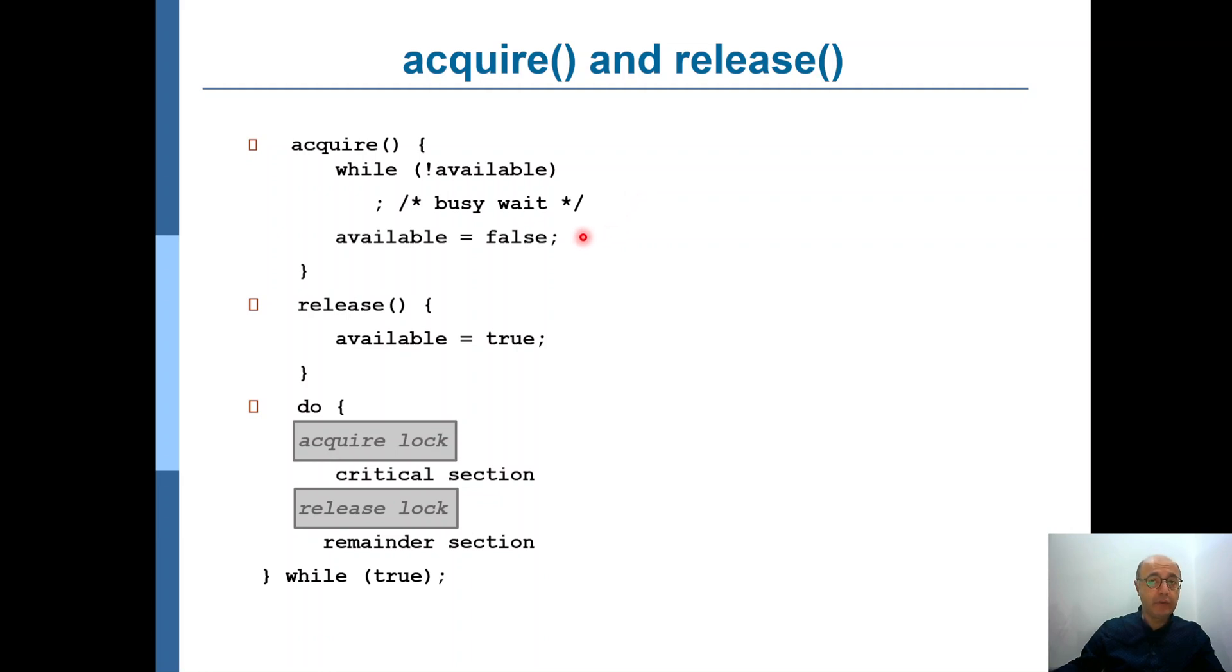But it should first convert the value of available back to false so that it can prevent other processes from entering their critical sections.